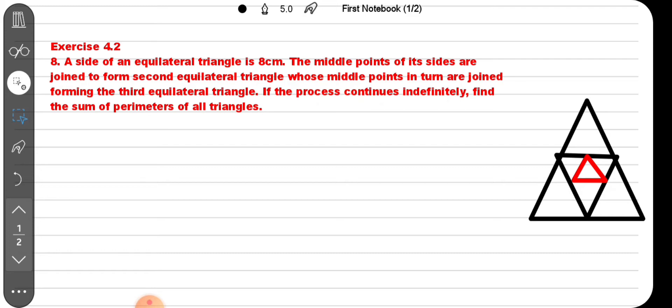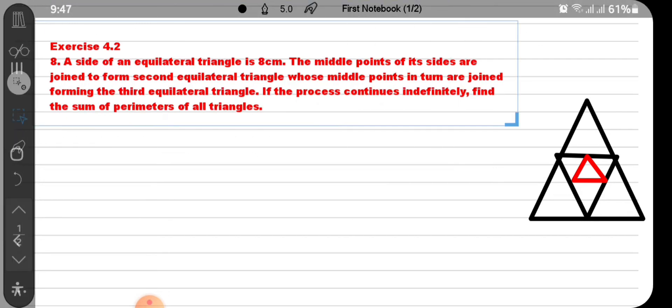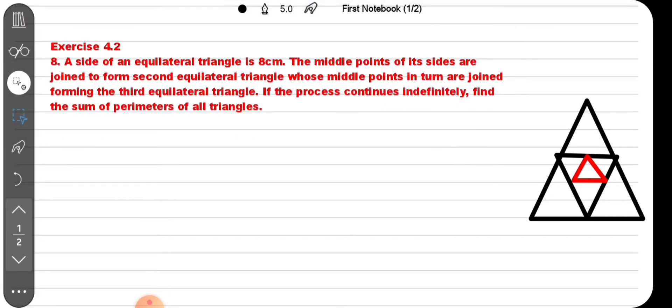The question states: A side of an equilateral triangle is 8 centimeter. The middle points of its sides are joined to form a second equilateral triangle, whose middle points in turn are joined forming the third equilateral triangle.